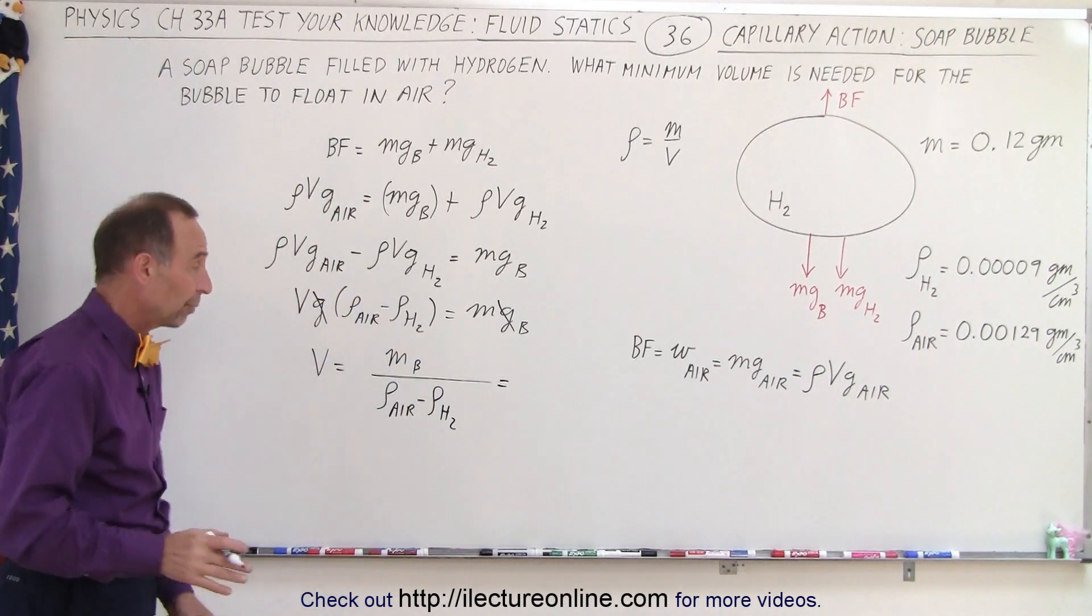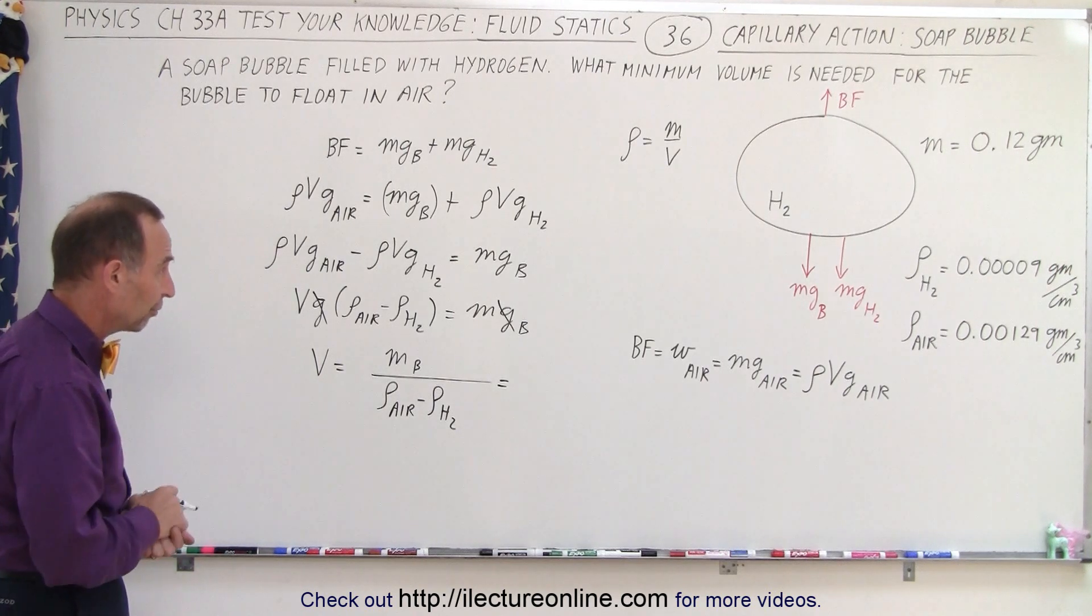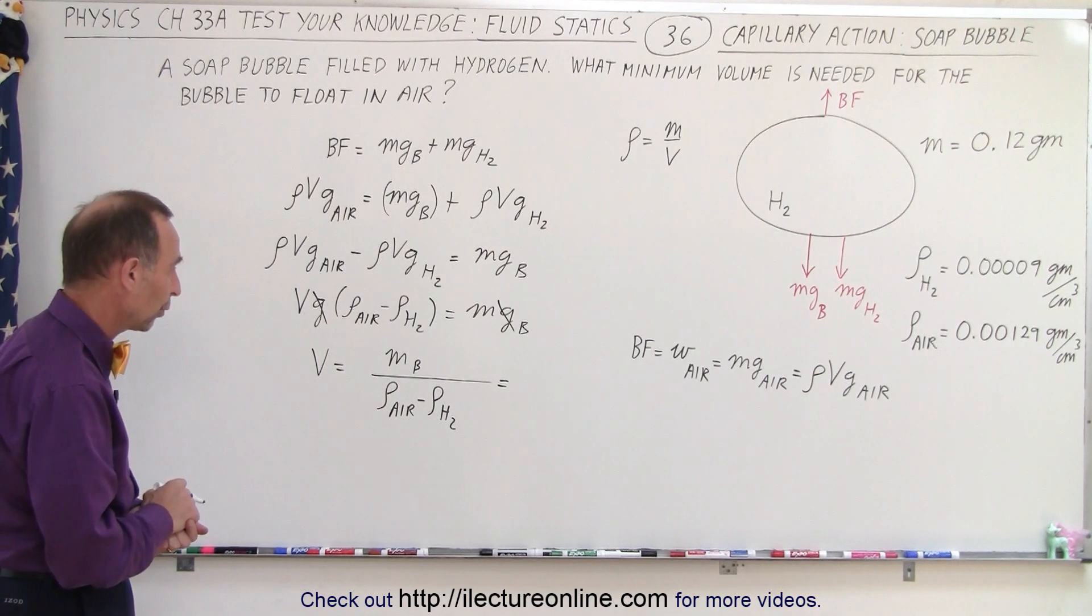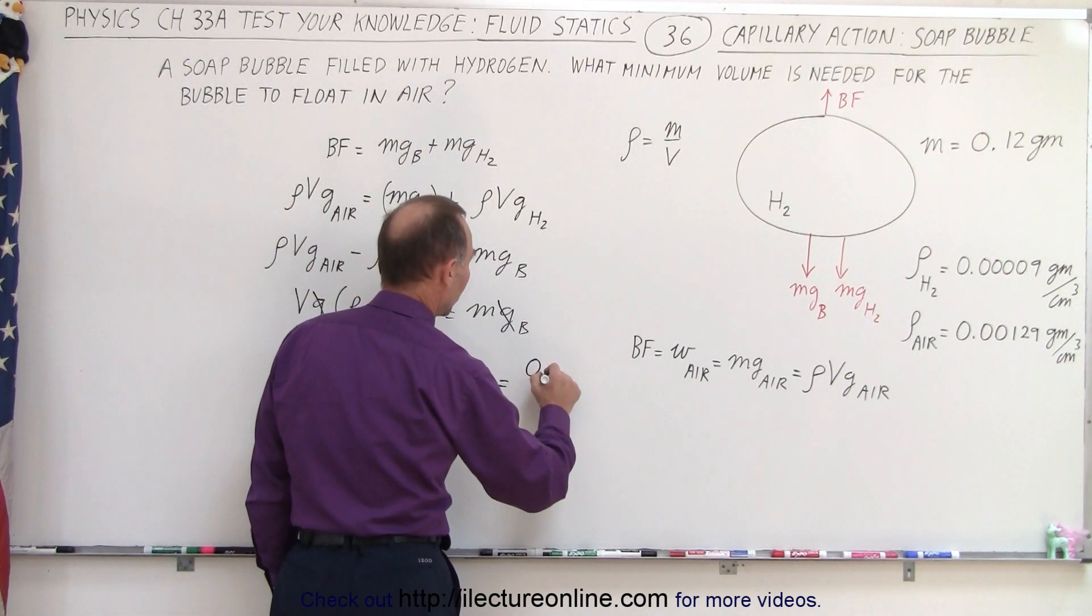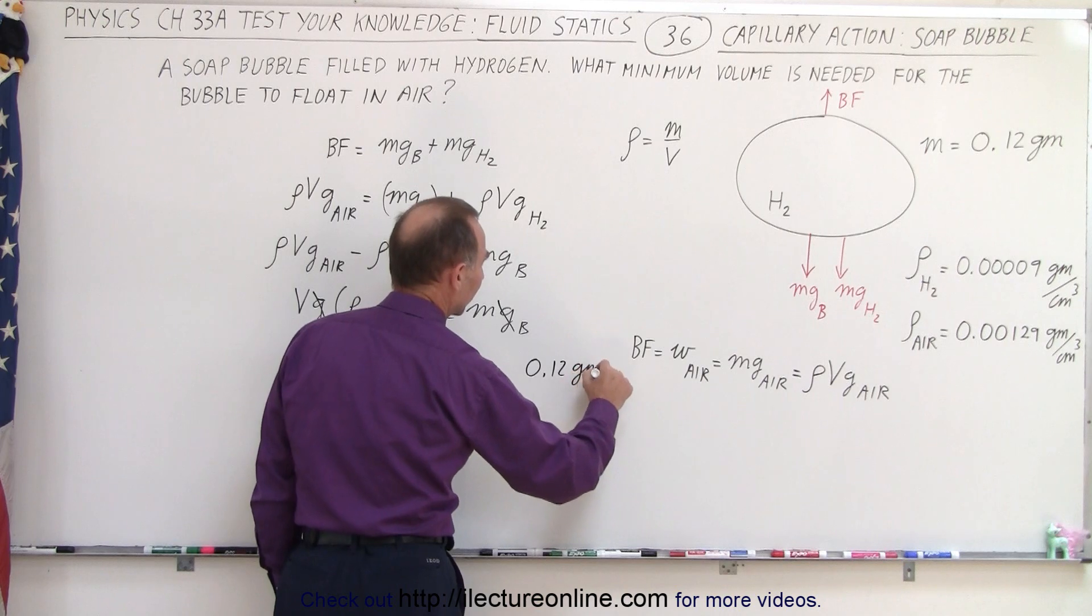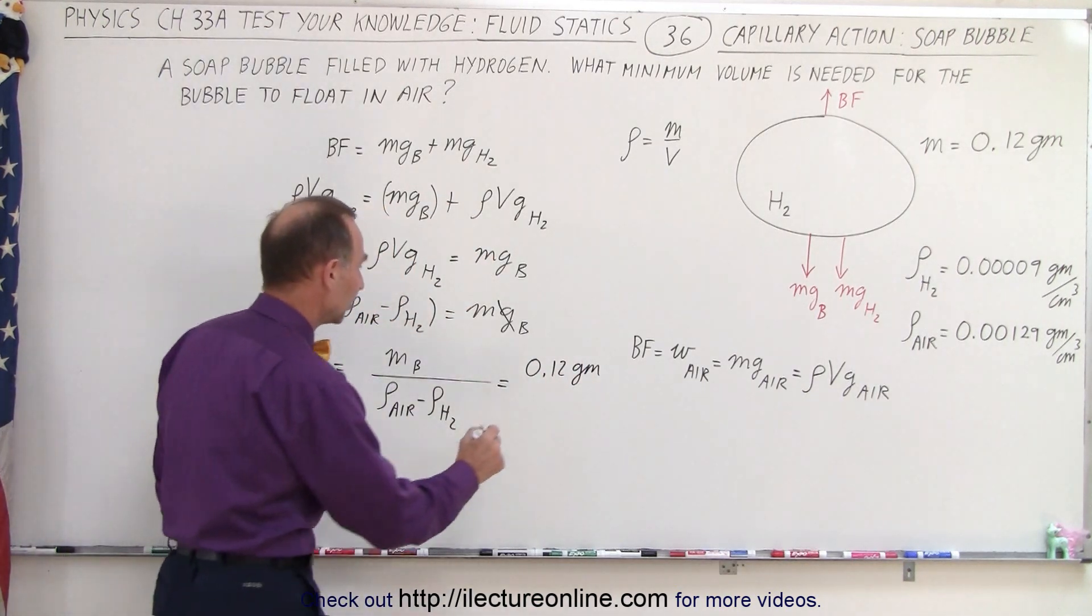It really isn't any different from what we would do with a hot air balloon. It has the same concept, but here it's for much smaller units, of course. The mass of the bubble is going to be equal to 0.12 grams. So I think we're going to leave this in CGS units so the volume is going to be in cubic centimeters.